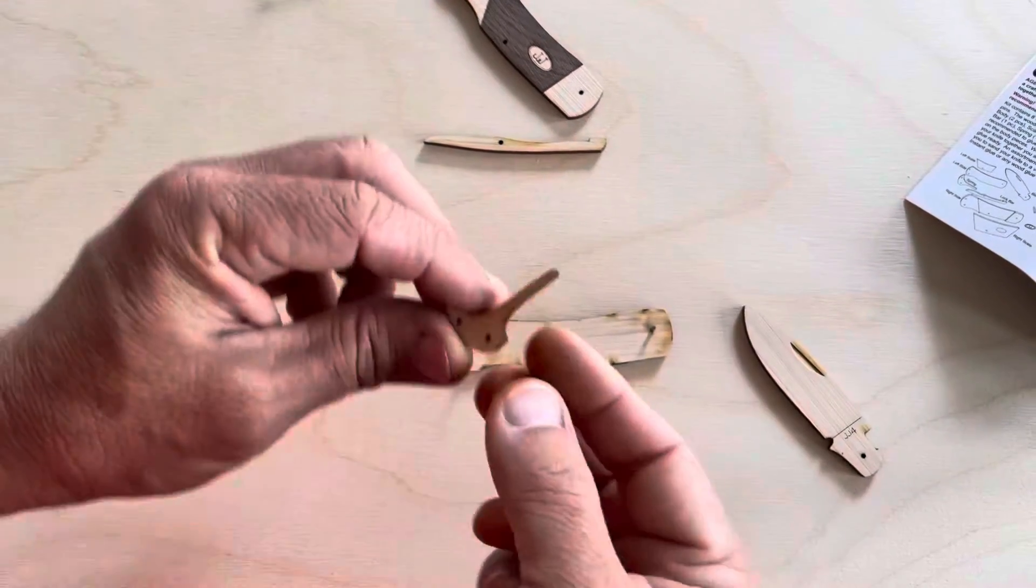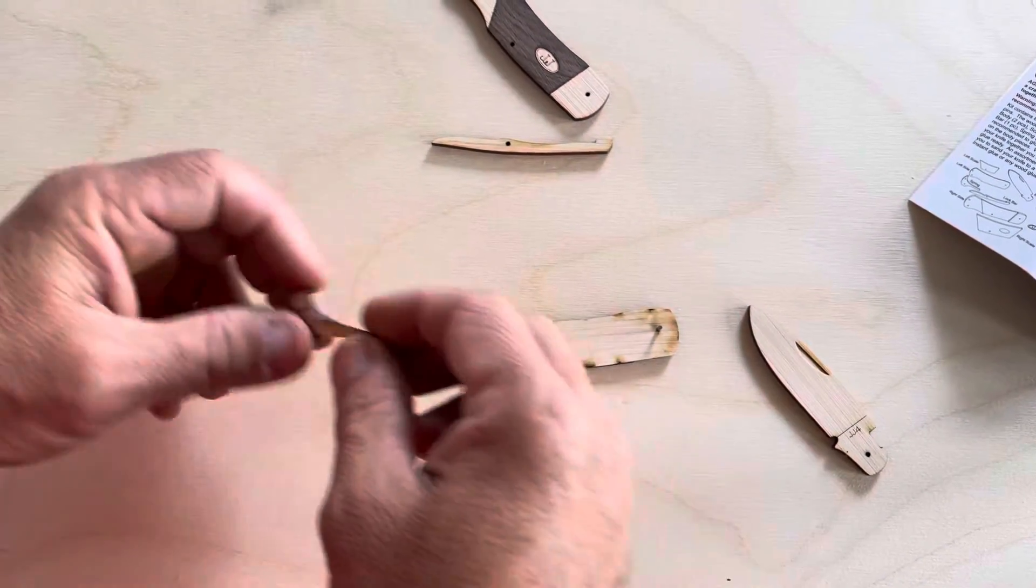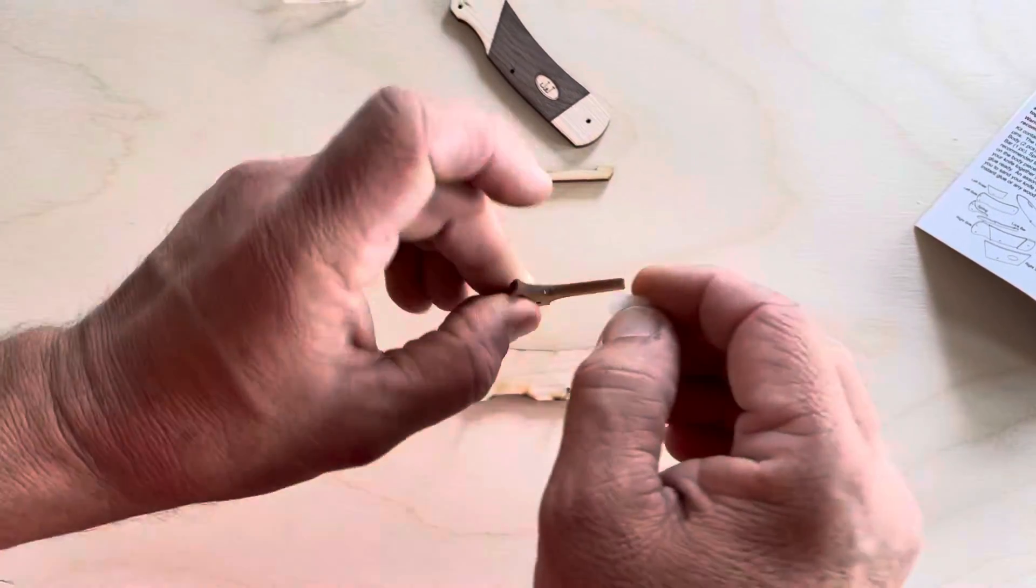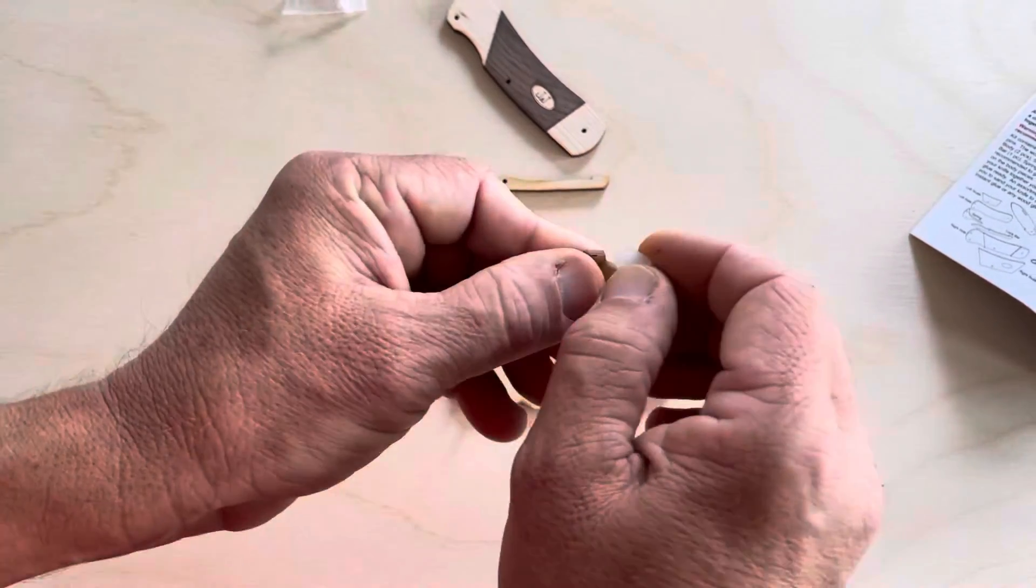We're going to take the spring. This is the spring. And I have a piece of wax. This is something I had around the shop. You could use a birthday candle or white crayon.